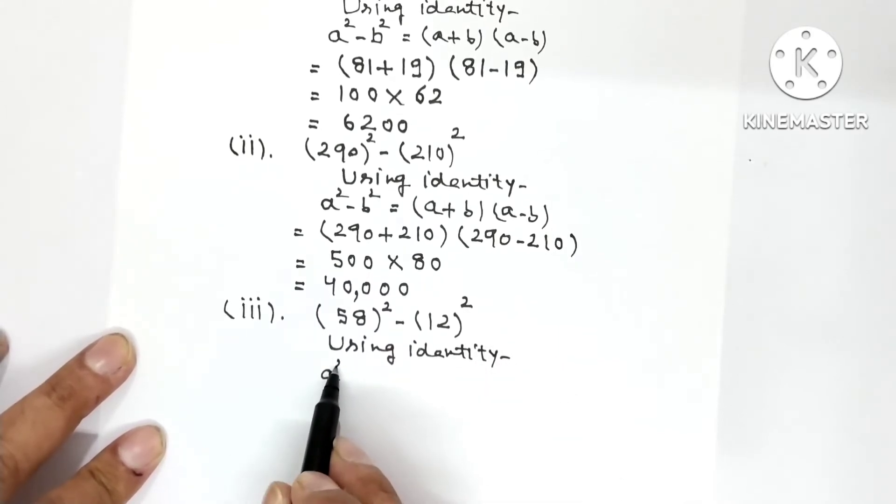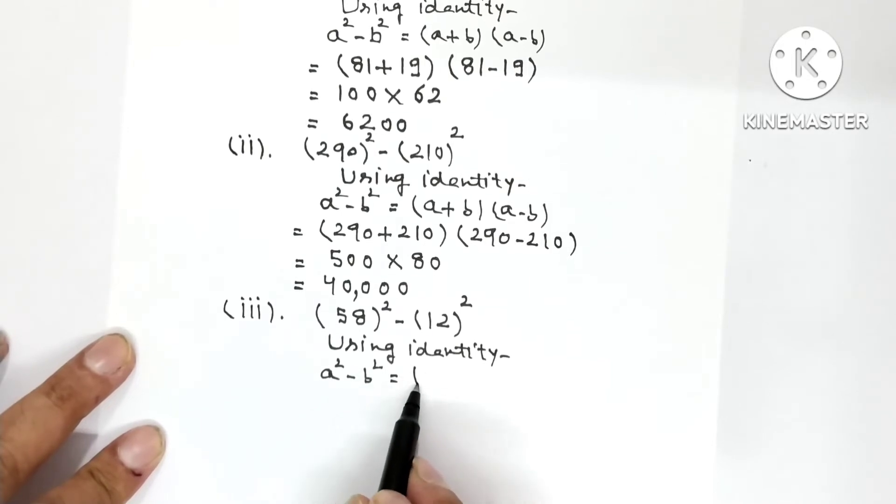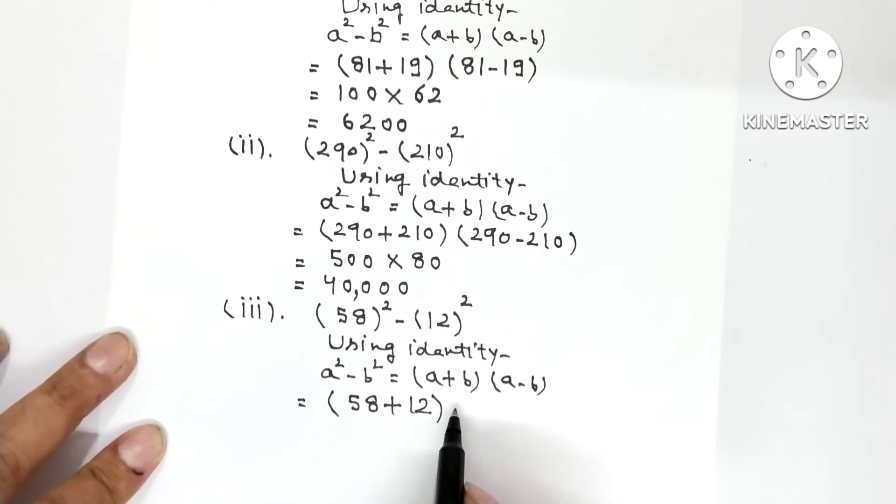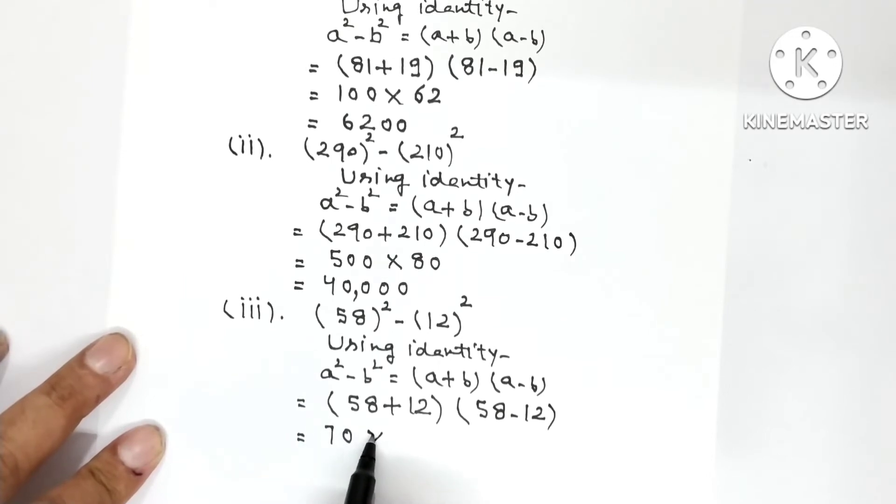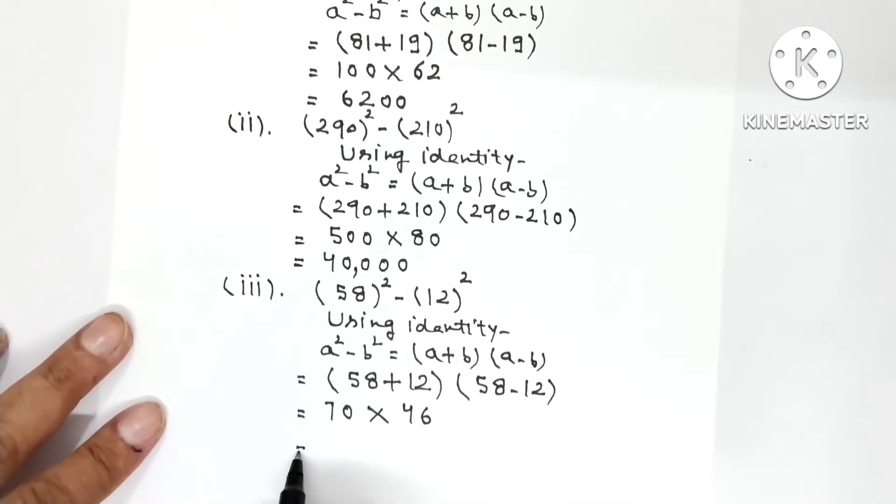A square minus b square is equal to a plus b into a minus b. So a was 58 in one bracket plus 12. 58 plus 12 into 58 minus 12. If you add 12 to 58, you get 70. Multiplied by 8 minus 2 is 6, 5 minus 1 is 4.